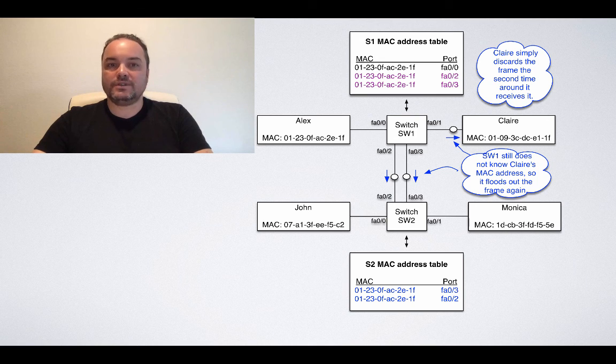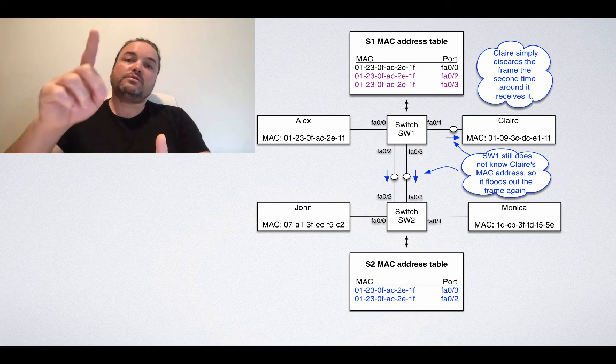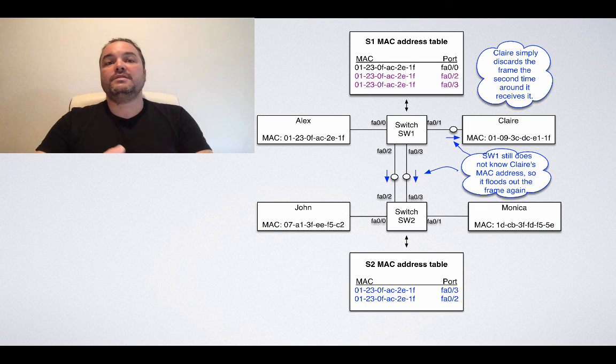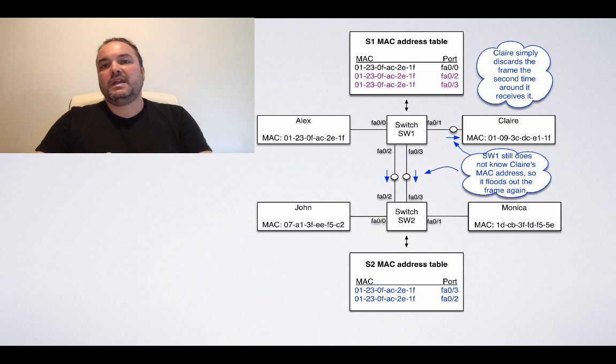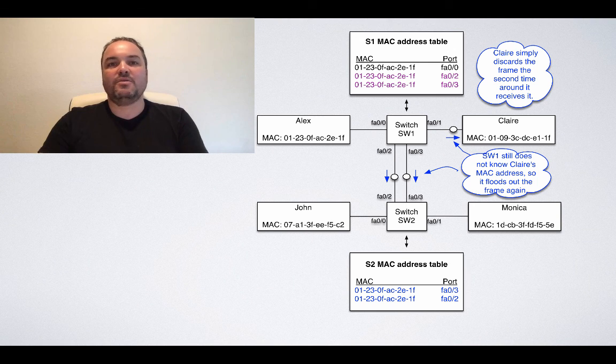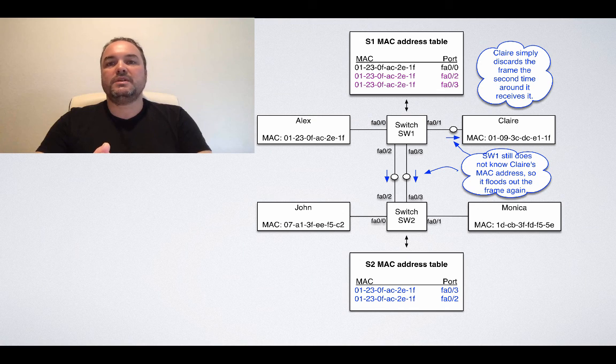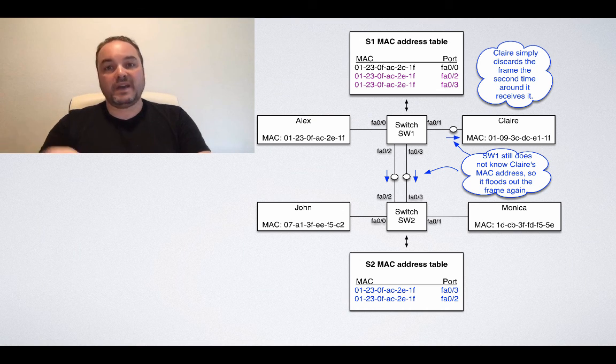But it gets even worse. SW1 still doesn't know the MAC address of Claire, so what does it do? When it receives the frames back from SW2, it floods them again on FA01, FA02, and FA03. Now Claire receives the frame again, and he will likely be confused because it would be like, Dear SW1, why did you send me this frame again? I already got it a few seconds ago. But Claire will simply discard the frame, which is bad because it needs to spend some computing power to do that. But it's not even the worst.